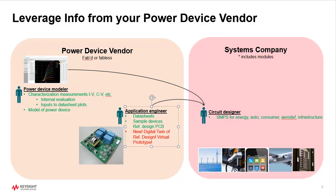It's well known you can leverage information from your power device vendor. If you're dealing with a new power transistor — such as silicon carbide — it doesn't make sense to start from a blank piece of paper. Your device vendors have already done some of the work for you. They create a reference design PCB, trying to be as helpful as possible to get the device designed in because they want to see volume as soon as possible. They provide device models, IV measurements, CV measurements for internal evaluation and data sheet plots. The application engineer gives you data sheets, sample devices, and a reference design PCB already close to what you want to build.